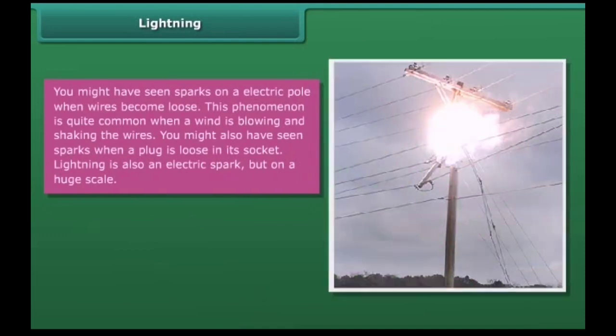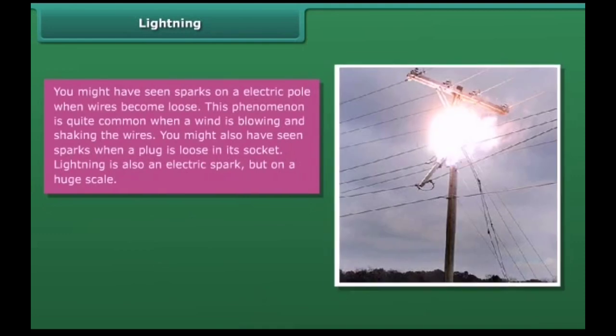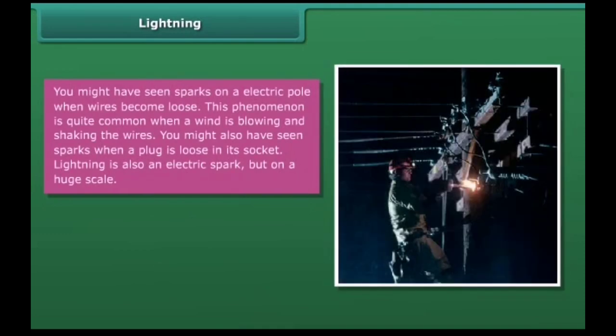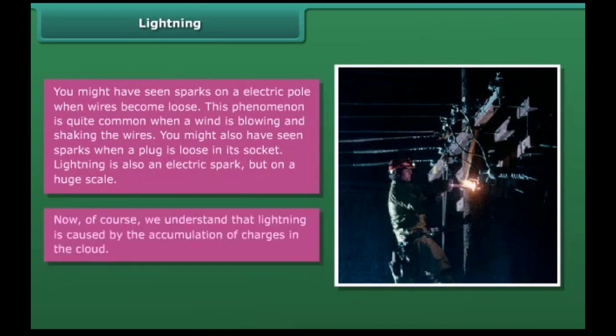Lightning. You might have seen sparks on an electric pole when wires become loose. This phenomenon is quite common when a wind is blowing and shaking the wires. You might also have seen sparks when a plug is loose in its socket. Lightning is also an electric spark, but on a huge scale. We understand that lightning is caused by the accumulation of charges in the clouds.